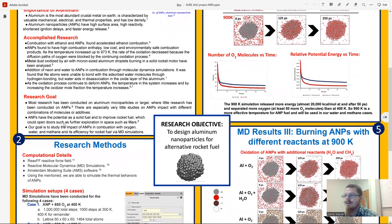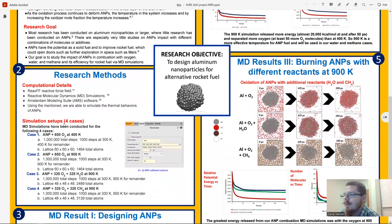The goal for this research is that most research has been done on aluminum microparticles, so our research is to focus on nanoparticles of aluminum. There's very little research on this, especially with combinations of different molecules or additives. ANPs have the potential as a solid fuel and to improve rocket fuel, which could open doors such as further exploration in space, such as Mars. Our goal is to study the impact of ANPs in combustion with oxygen, water, and methane, and its efficiency for rocket fuel via molecular dynamics simulations.